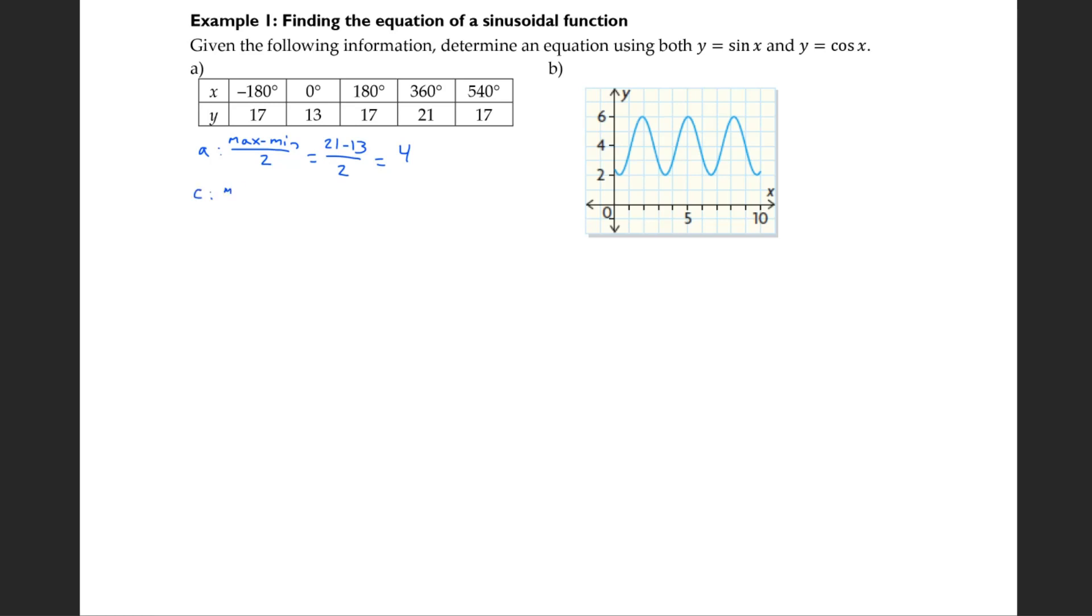Meanwhile, our C, max plus min divided by 2, 21 plus 13 divided by 2, which is 17. In this case I didn't show the y equals, solely because we're looking for the C value, not the equation of the axis, even though they technically are the same thing. And luckily, 17 ends up being our equation of the axis in the middle and ends up being this point that we have in our table. It's going to make our period very easy to see.